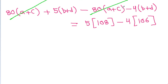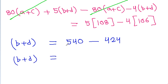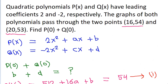So B plus D equals 5 times 108, which is 540, minus 4 times 106, which is 424. Therefore B plus D equals 540 minus 424, which equals 116.